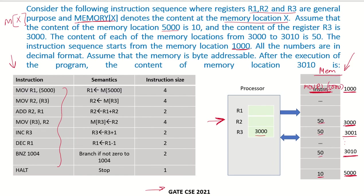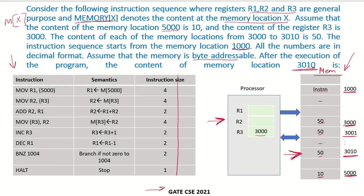All numbers are in decimal format. Assume that the memory is byte addressable. After execution of the program, what will be the content of memory location 3010? The first instruction is available at memory address 1000, so we put that address there.